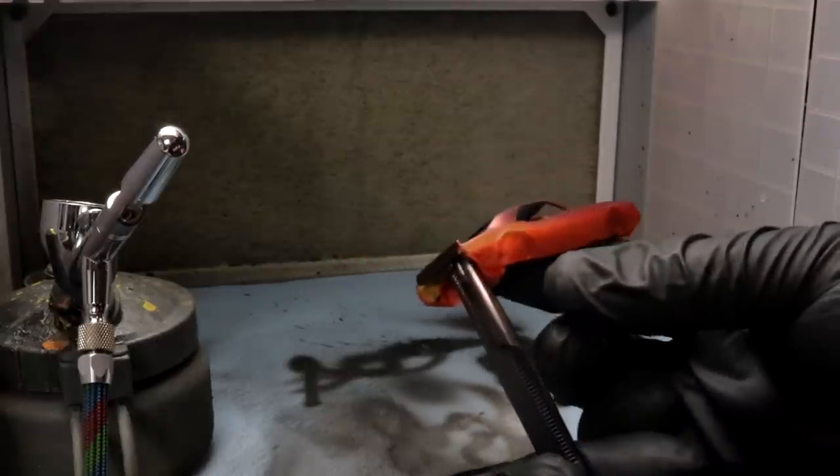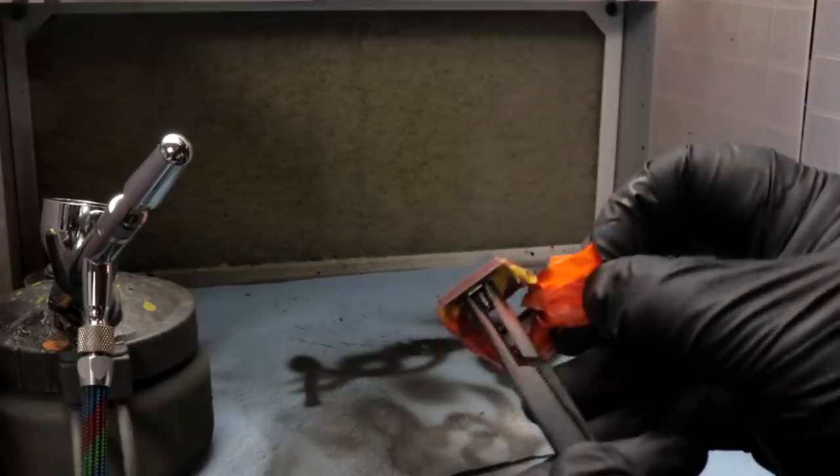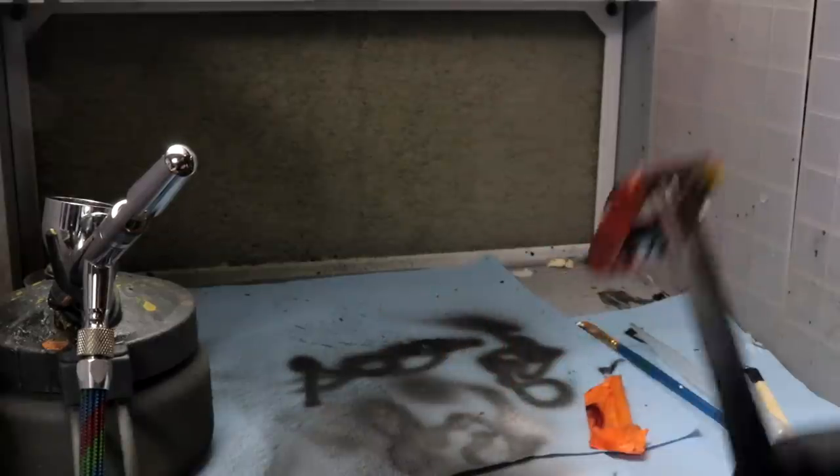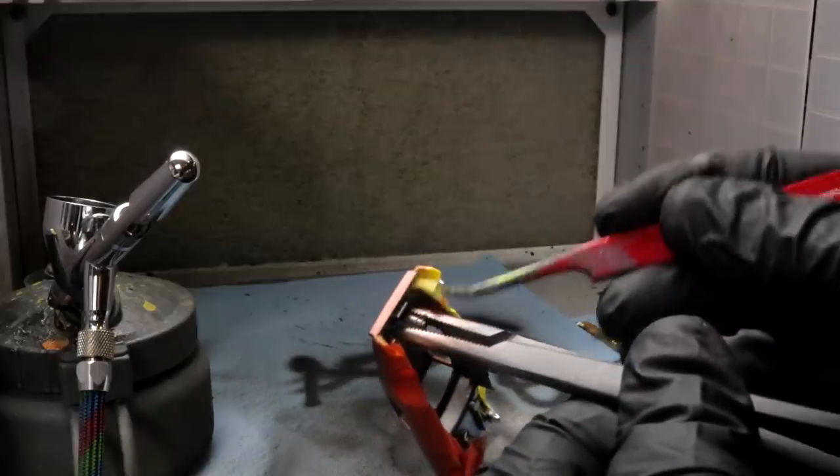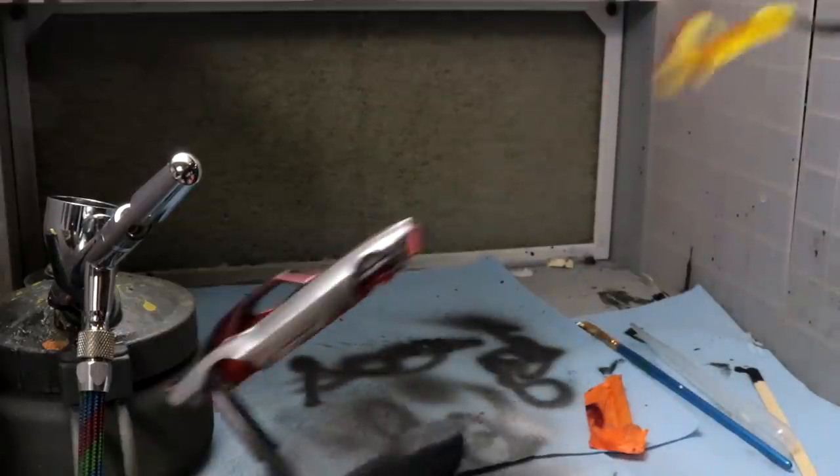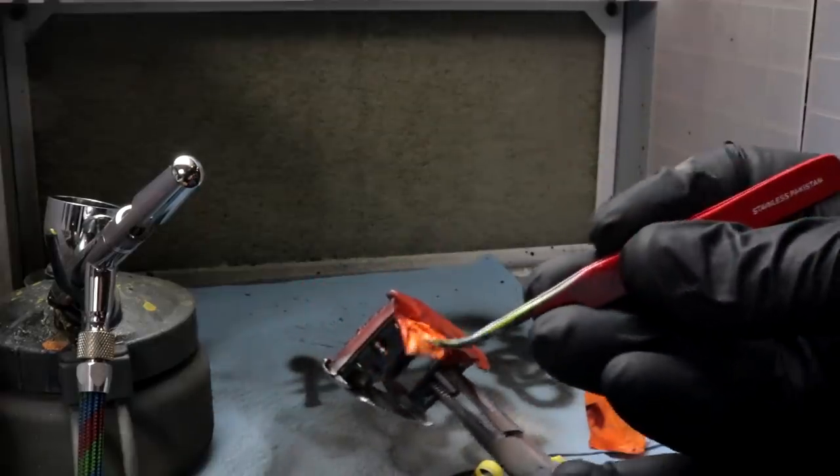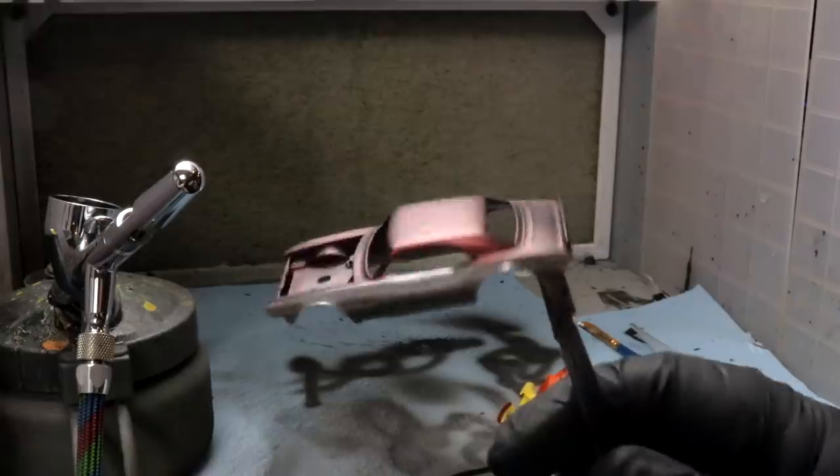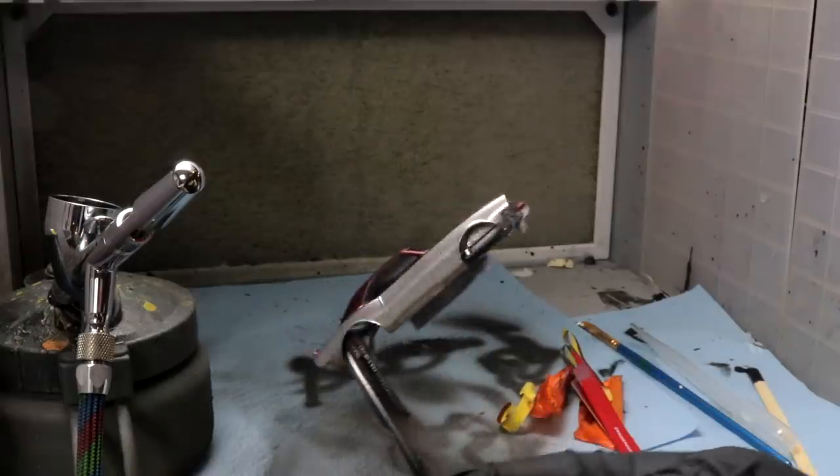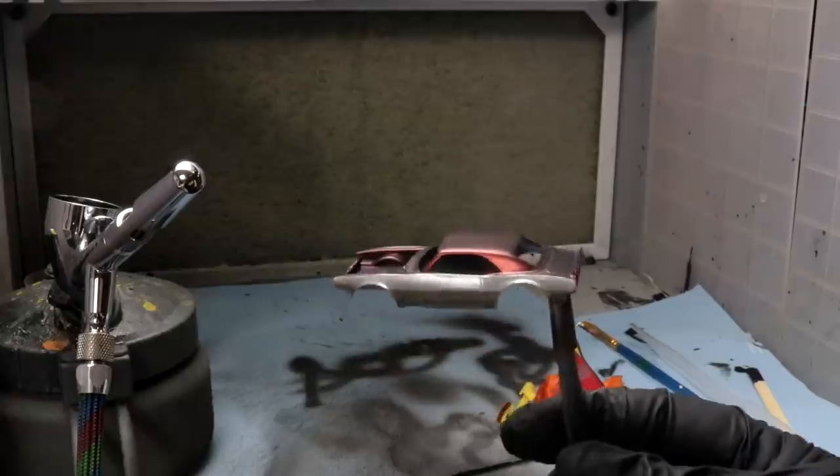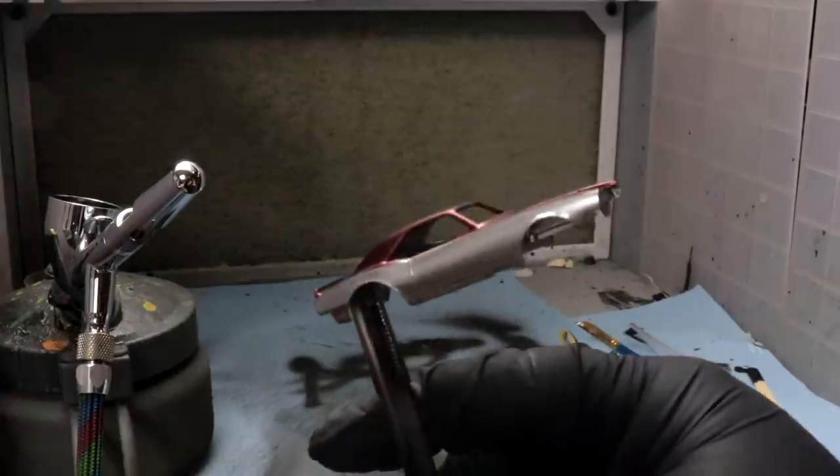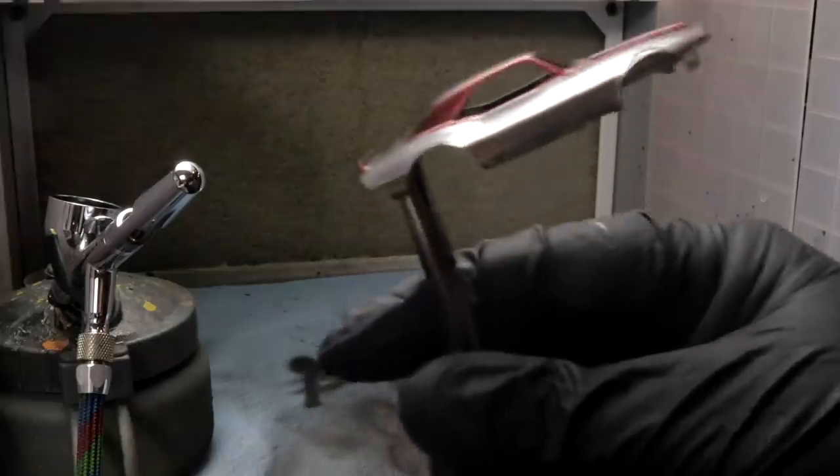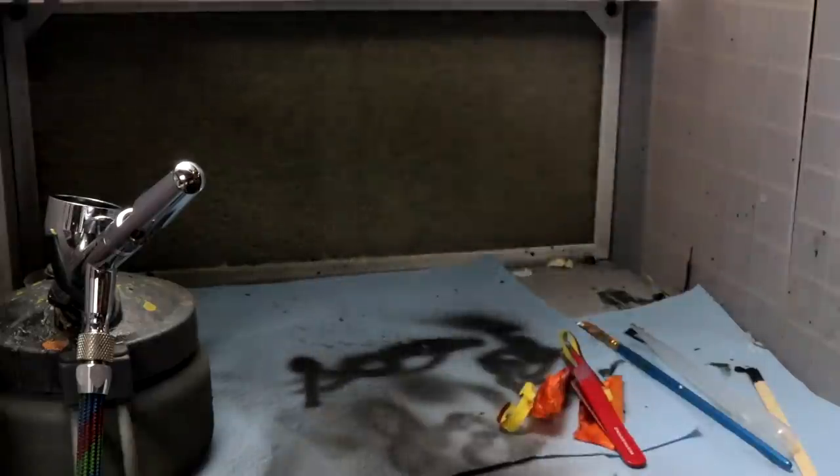Pull this tape off ASAP, ASAP. The longer you leave this tape on, the worst that tape line's gonna be. So keep that in mind. So that looks pretty good. We're gonna go ahead and clear coat this once the candy dries on top and we should end up with a pretty sweet-looking car. That's a nice crispy paint line. Everything's going real good here.